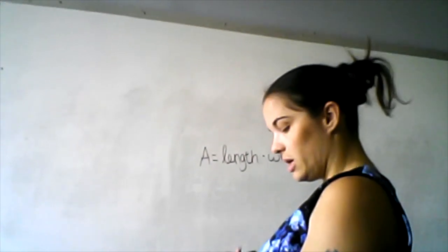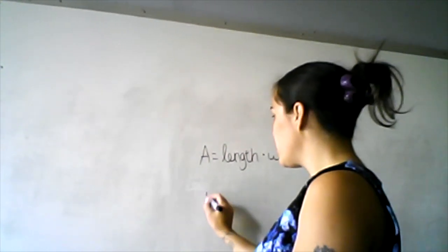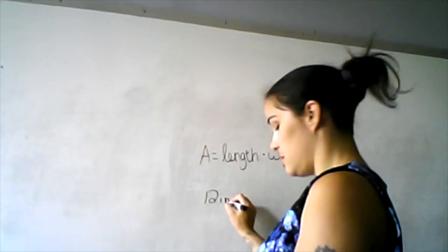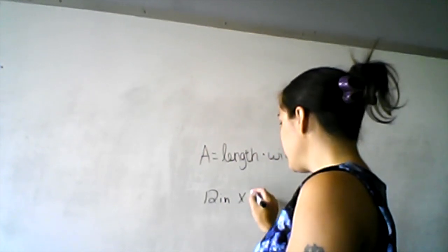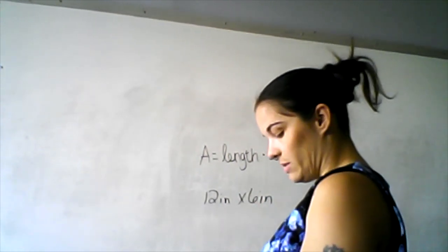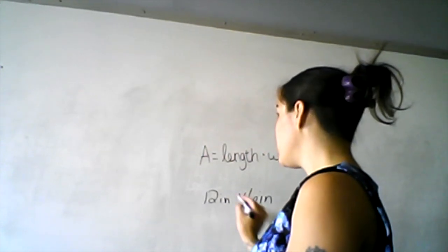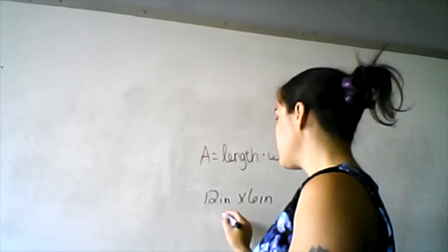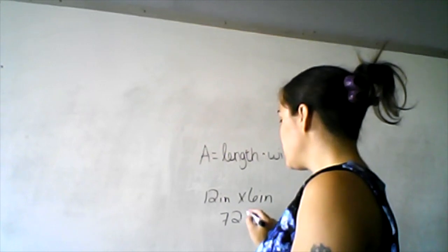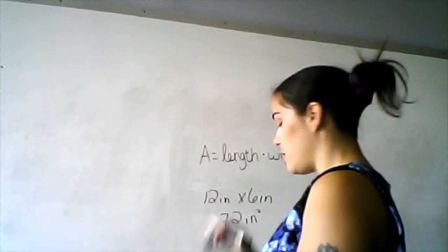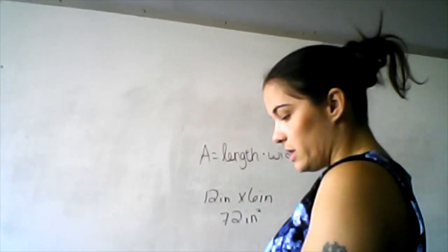Okay, so if we wanted to find the area of a square that is 12 inches by 6 inches, 12 times 6 is 72, so 72 inches squared. Remember, area is always squared.